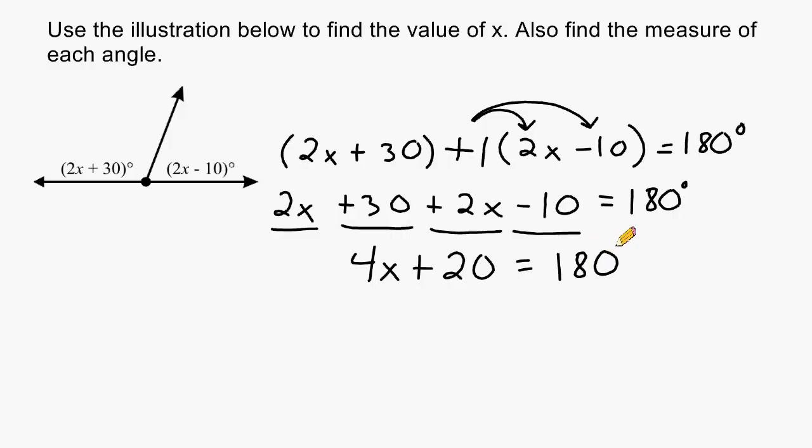The next thing that we have to do is isolate our variable. So we are going to start by subtracting 20 on the left and moving it over to the right side of our equation. And we have to do the same thing on the right that we did on the left to balance out our equation. So on the left, all we have remaining is 4x. And on the right, we have a total of 160.